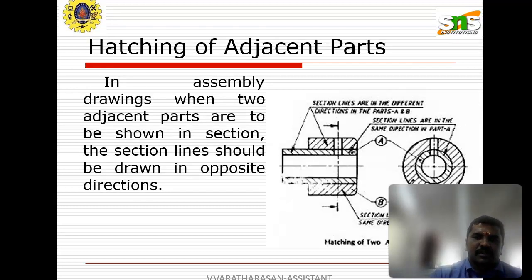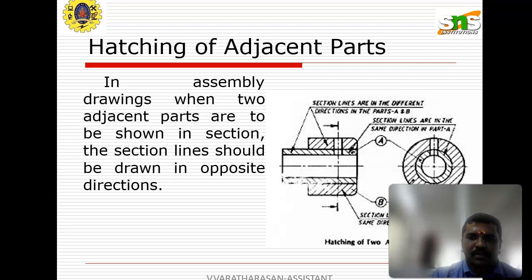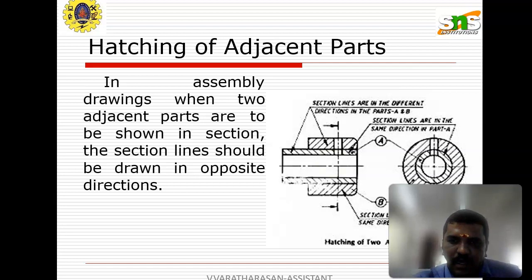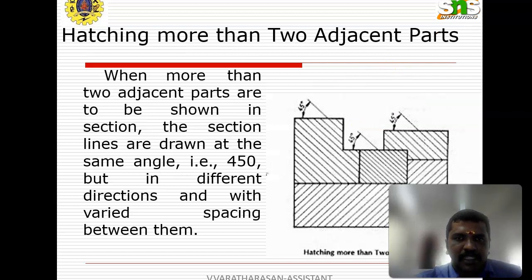Hatching of adjacent parts is represented as follows. In assembly drawings, when two adjacent parts are to be shown in section, the section lines should be drawn in opposite directions — one slanting to the right and the other to the left, with different angles. When more than two adjacent parts are shown in section, the section lines are drawn at the same angle of 45 degrees but vary in the spacing between the hatching lines.